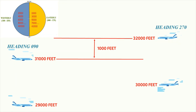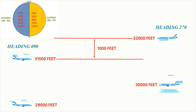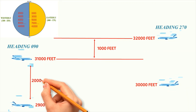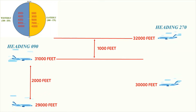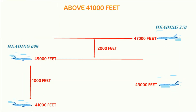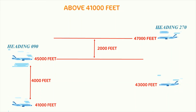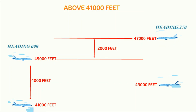If you observe further, you can see that if two aircraft are flying in the same direction, they are automatically separated by a minimum of 2,000 feet. Similarly, if aircraft are flying above 41,000 feet, then aircraft in opposite directions are automatically separated by 2,000 feet, and aircraft in the same direction are automatically separated by 4,000 feet.